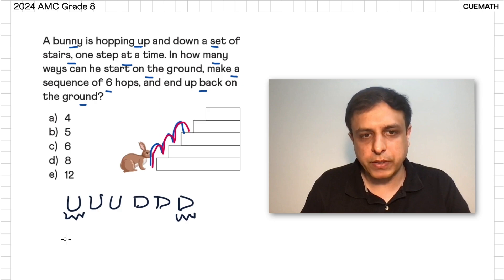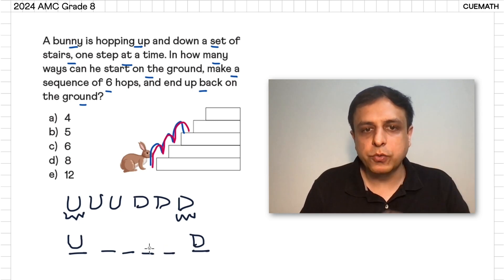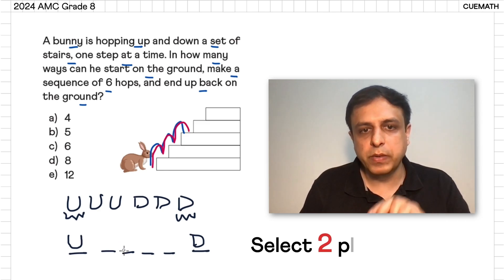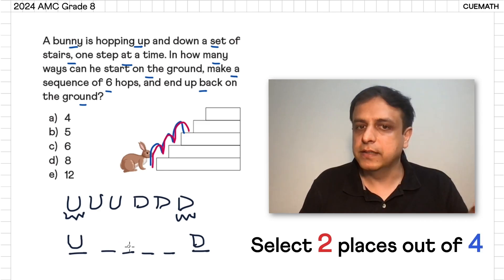So what I really have to do is count the number of sequences of six letters starting with a U, ending with a D, with four letters in between of which two are U's and two are D's. The number of such permutations is, you just select two places out of four where you will put U's, the remaining two places will get D's.